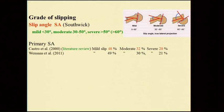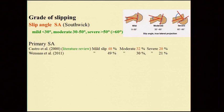Regarding grade of slipping according to the Southwick slip angle: it's called mild when less than 30 degrees, moderate at 30 to 50 degrees, and severe at more than 50 degrees (some use 60 degrees). In a literature review by Castor, the primary slip was mild in about 50 percent, moderate in one-third, and severe in 20 percent — almost the exact same figures as in our Norwegian study.